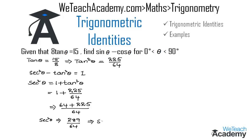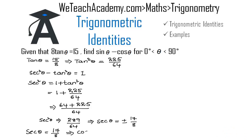So the value of secant theta will be equal to plus or minus 17 by 8, which is the square root of 289 divided by 64. Since theta lies between 0 degrees and 90 degrees, secant theta is equal to 17 by 8. From this we can also find the value of cos theta: cos theta equals 1 by secant theta, so the reciprocal of 17 by 8, which is 8 by 17, is the value of cos theta.